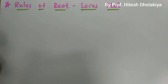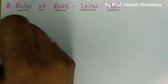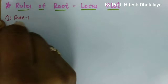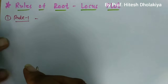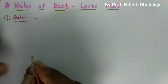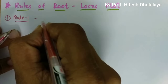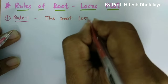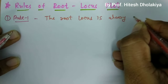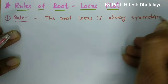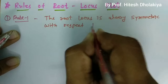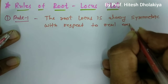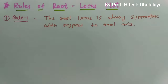In this session, I will explain the rules for plotting a root locus. Let us begin with the first rule: the root locus is always symmetric with respect to the real axis. When we plot the root locus, the plotting will always be symmetric with respect to the real axis.